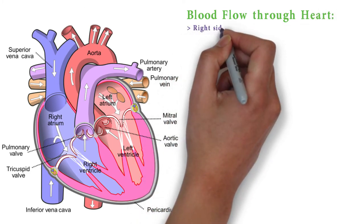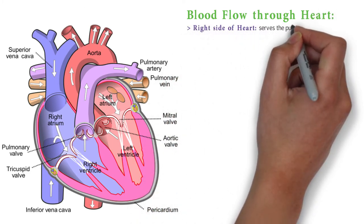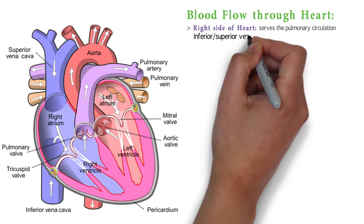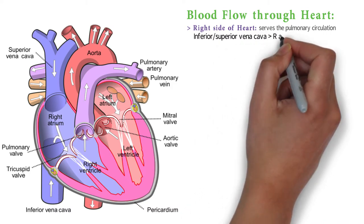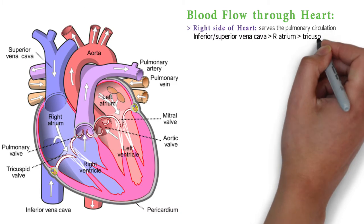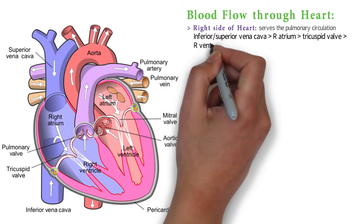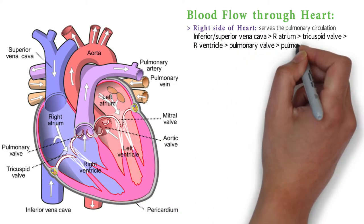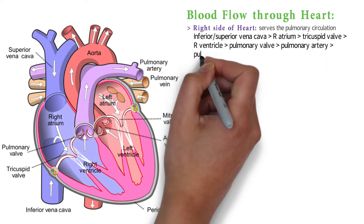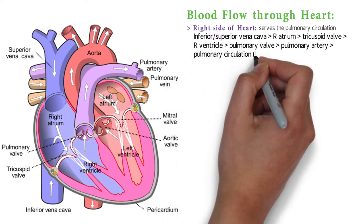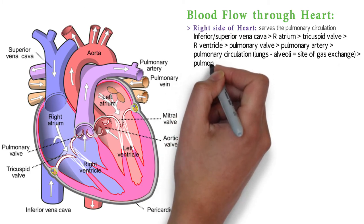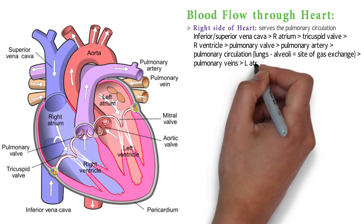Now we are going to look at blood flow through the heart, starting at the right side. The right side of the heart serves the pulmonary circulation, starting at the inferior and superior vena cava, where blood returns from the systemic circulation and is deoxygenated. The blood travels from the vena cava into the right atrium, then through the tricuspid valve into the right ventricle, then through the pulmonary valve into the pulmonary artery. This is where blood enters pulmonary circulation, traveling within the lung to the site of gas exchange — the alveoli — after which it travels through the pulmonary veins into the left atrium.